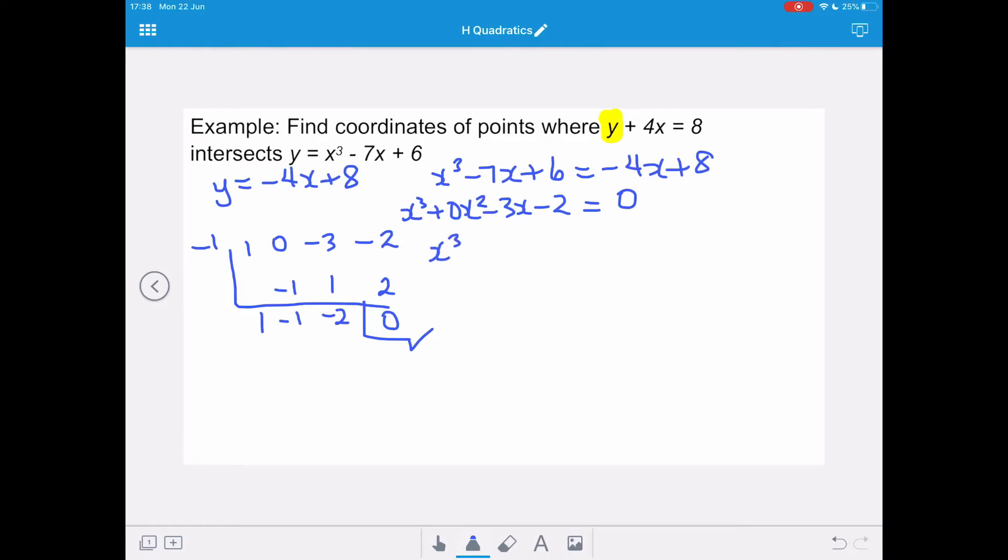So we need to rewrite this as x cubed minus 3x minus 2 equals, and it's going to be x plus 1 upon x squared minus x minus 2. And we've got x plus 1 upon x minus 2 if we factorise that bracket. And tidying up, we have x plus 1 all squared upon x minus 2.